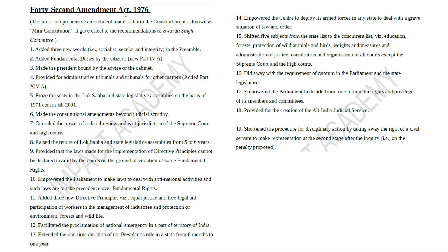The 42nd Amendment Act gave more powers to the Parliament. It raised the tenure of the Lok Sabha from five to six years, did away with the requirement of quorum in Parliament, and provided for the creation of the All India Judicial Service. It also shifted five subjects from the State List to the Concurrent List — education, forests, protection of wild animals and birds, weights and measures, and administration of justice. That is why even the Centre can enact amendments or acts on these particular issues. Initially the State List had 66 subjects; today there are 61.